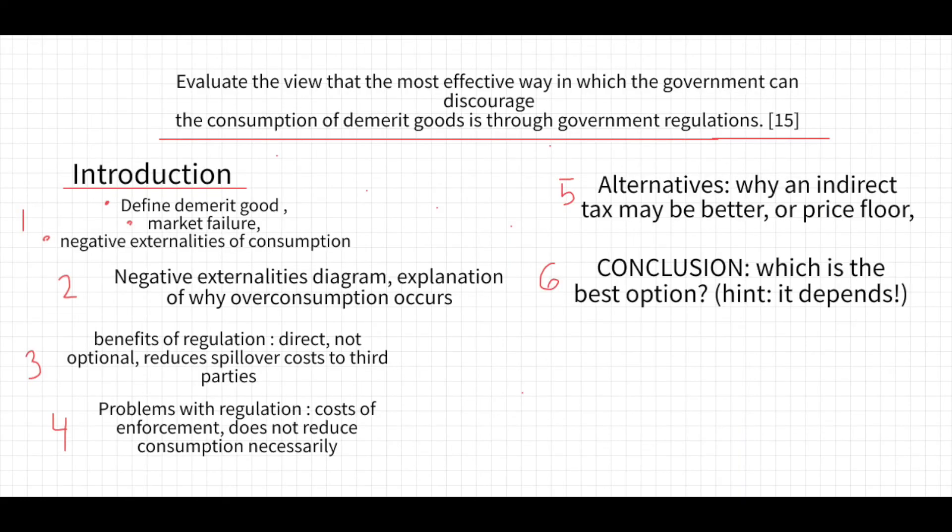Then for the 15 marker, if we got this question, you can see that the structure is introduction, definitions, and then from there on you want to structure it in terms of pros and cons. Here they're asking if government regulations is the best way to reduce the overconsumption of demerit goods. So we want to have pros of regulation as well as the diagram showing that regulation will effectively shift MPB, shift the demand curve closer to MSB because it will, for example, reduce the number of consumers through minimum age restrictions or reduce the attractiveness of the good because you cannot smoke indoors. Then you have the benefits of regulation: direct, non-optional, reduces spillover cost. Then you have the problem with regulation: the cost of enforcement does not reduce consumption necessarily.